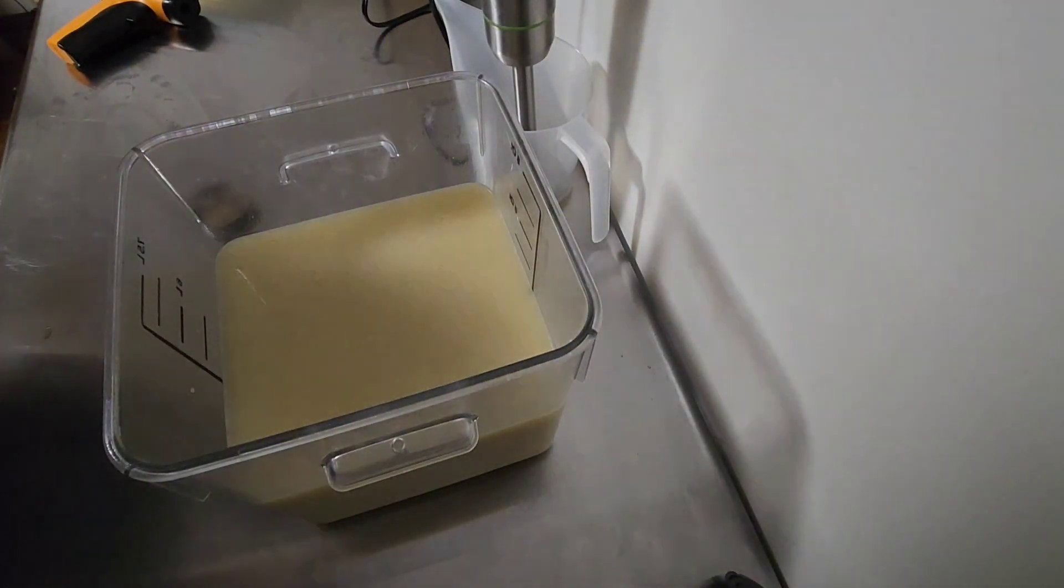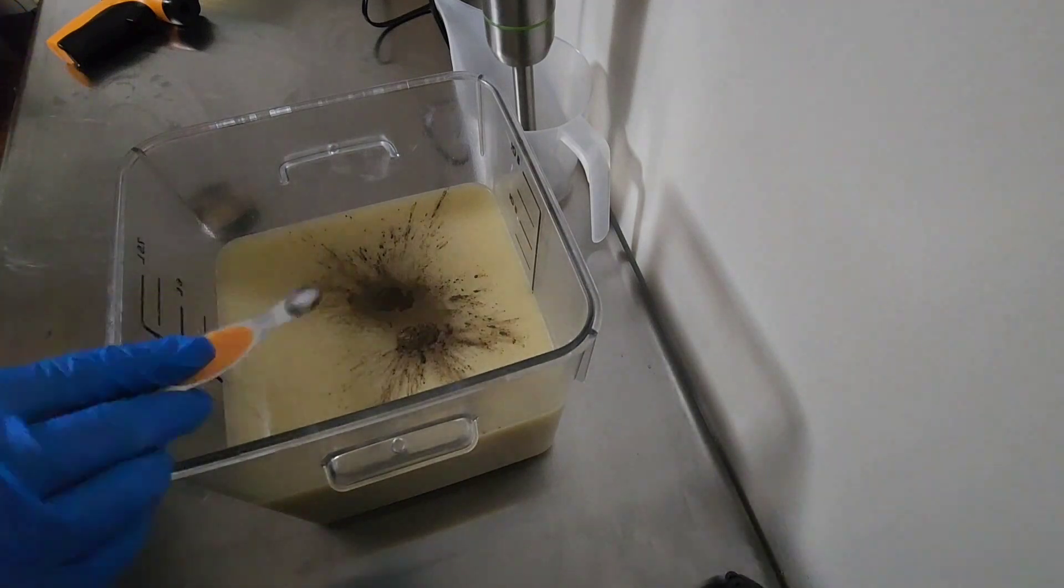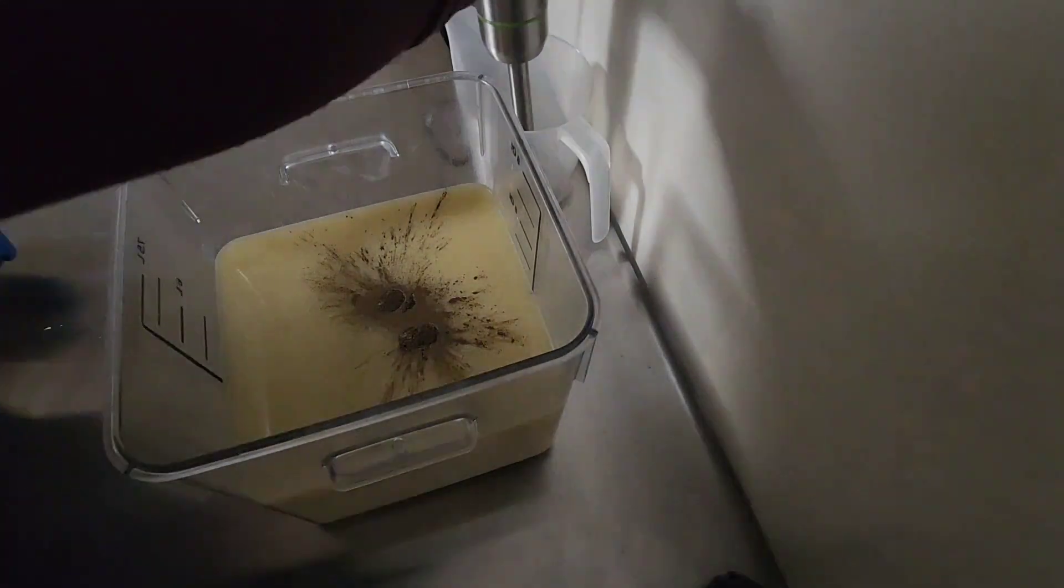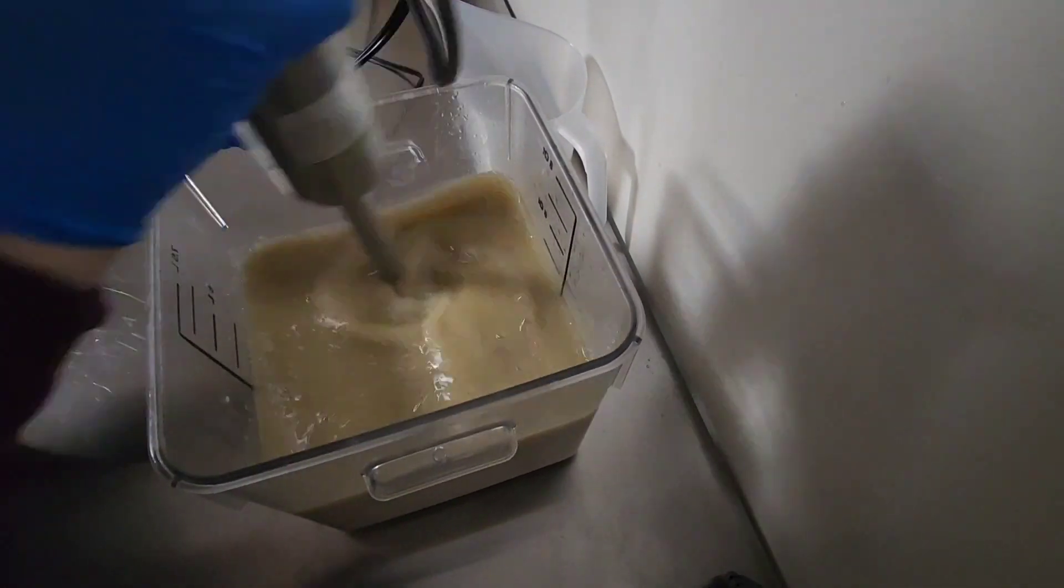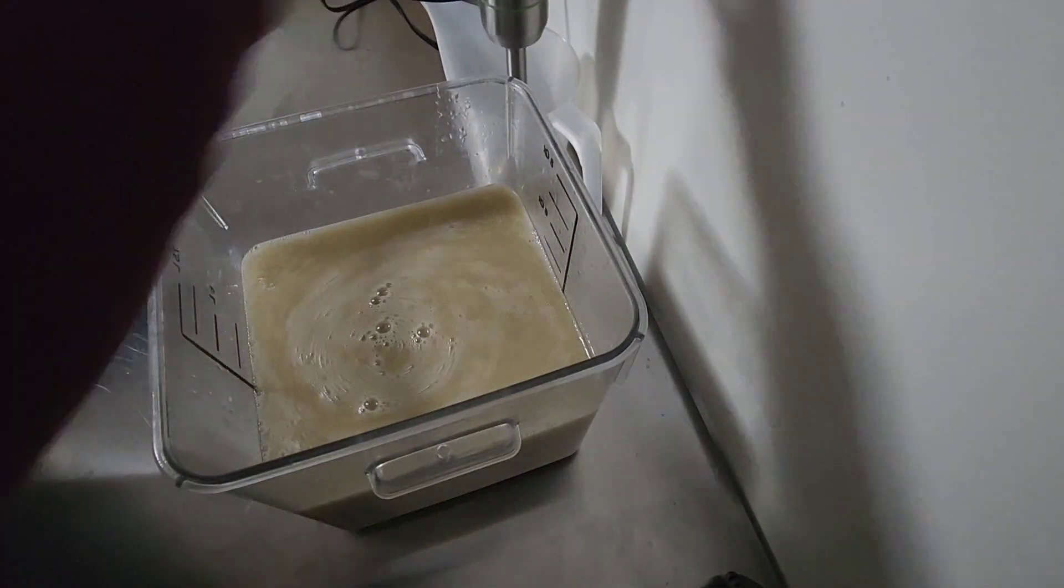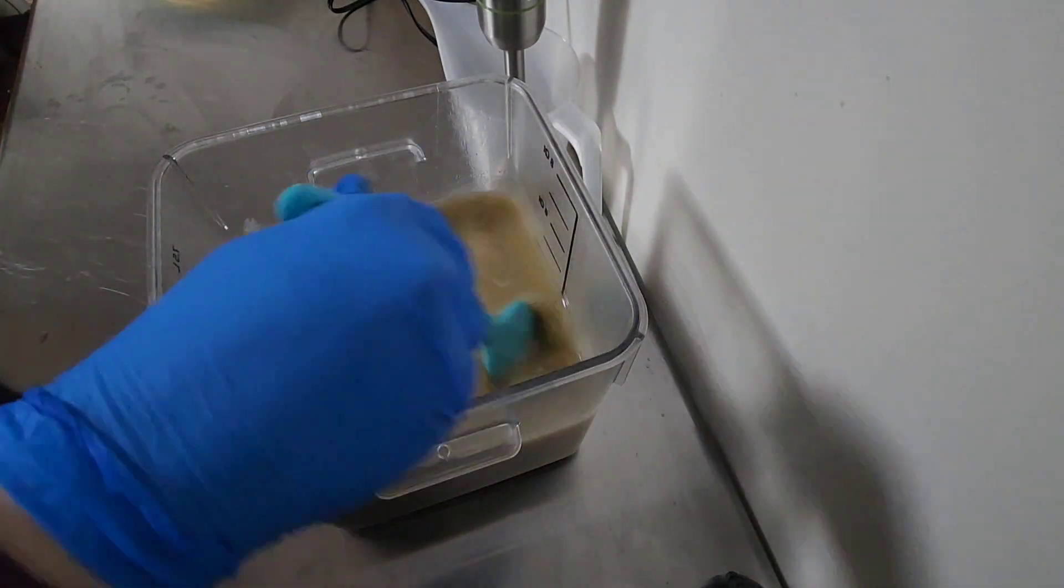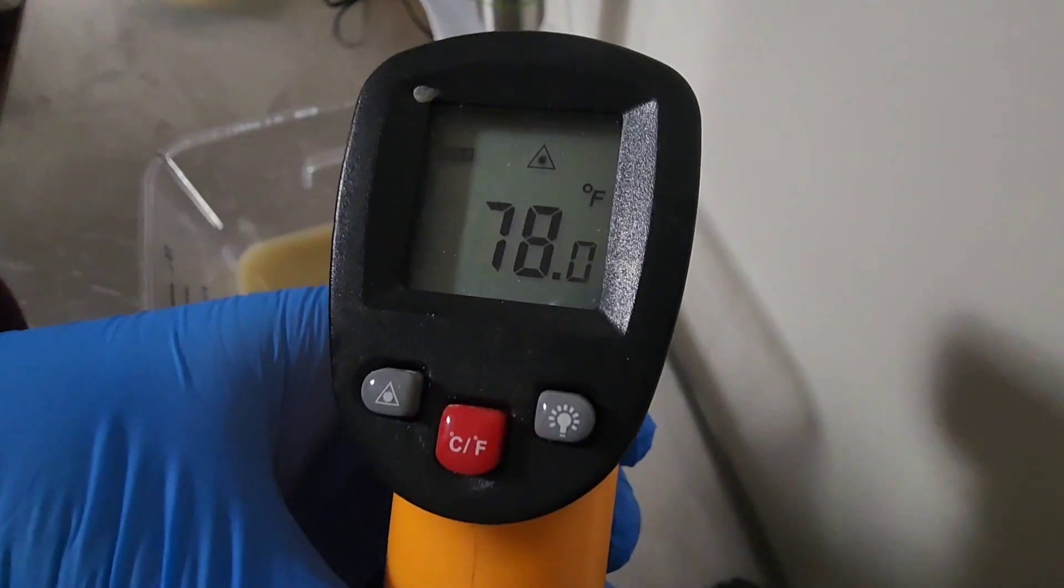Next I'm adding in some bronze brown mica. I wanted to make sure that the soap had a slight brown to it. The beer will discolor the soap a little bit, but I wanted to make sure that it was at least going to be tan or light brown.